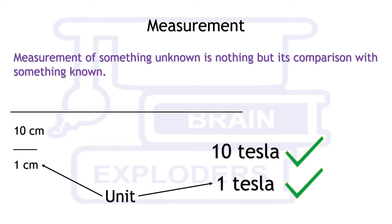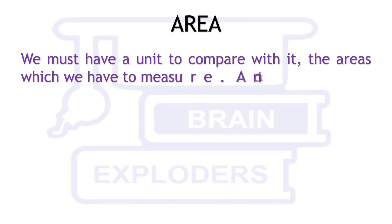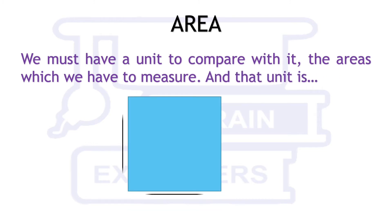The quantity which you are using as something standard to compare is called unit of that quantity. We must have a unit to compare with it the areas which we have to measure. And that unit is a square, a square having unit side length like cm, m, km, etc.